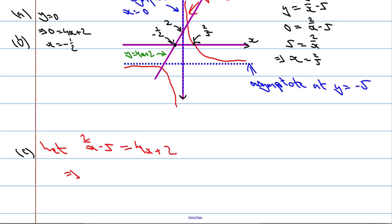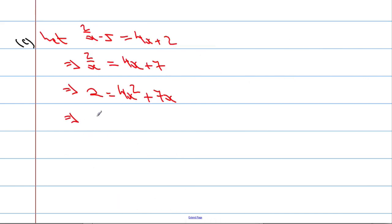Let's see if we can solve this now. So we get 2 over x equals 4x plus 7. Let's multiply across by x. We get 2 equals 4x squared plus 7x. And we're going to take 2 off both sides. So we get 4x squared plus 7x take away 2 must be equal to 0.